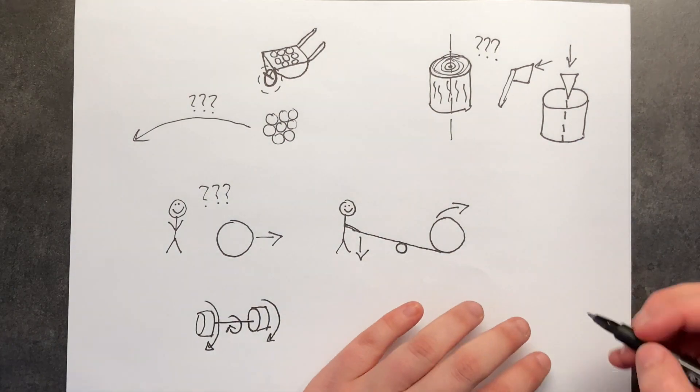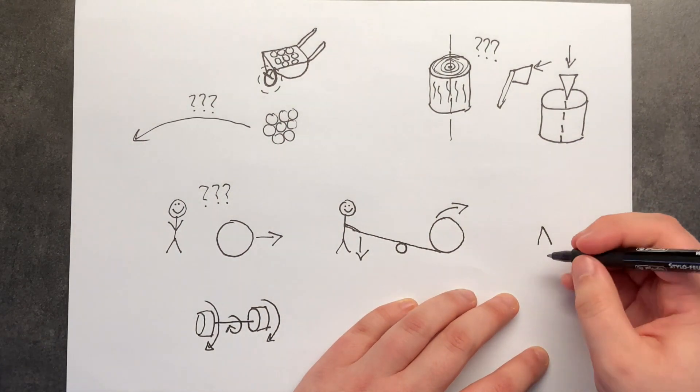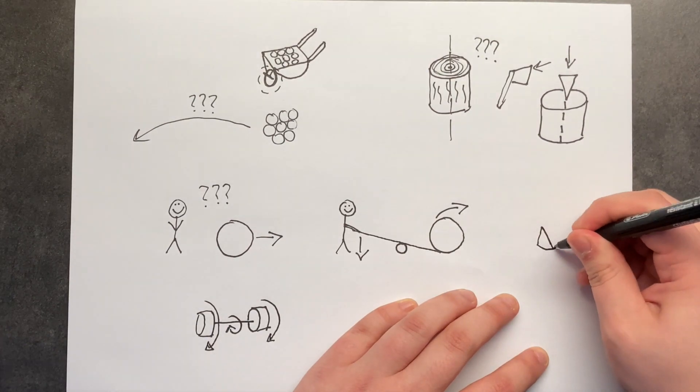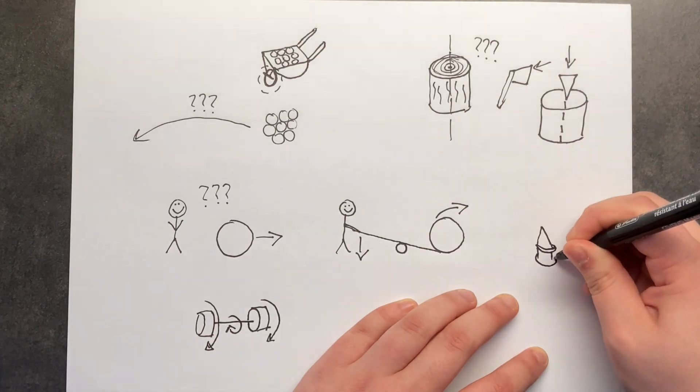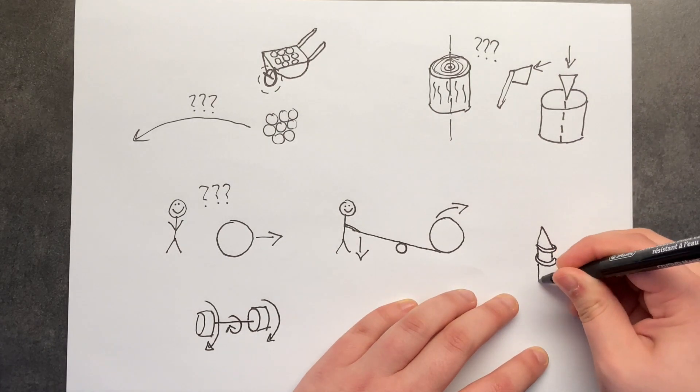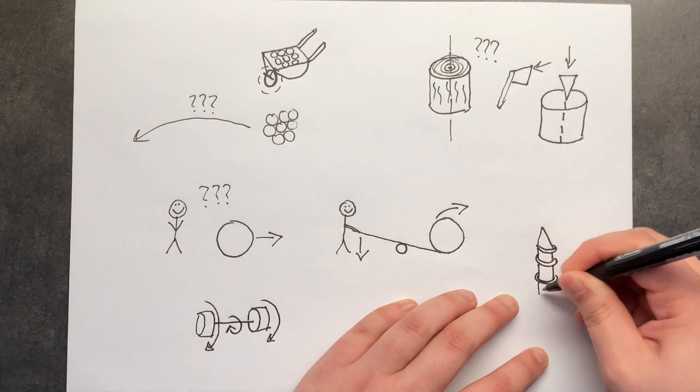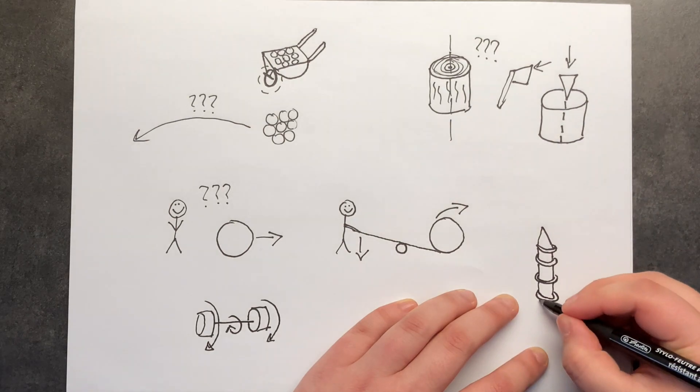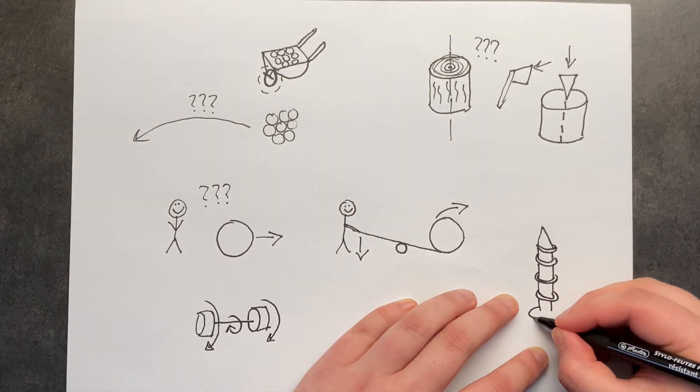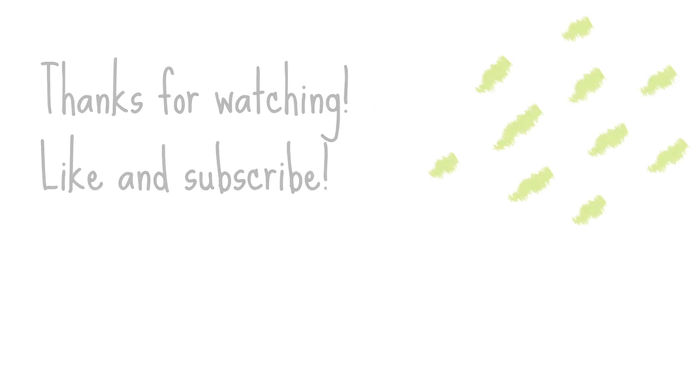Now the last simple machine that we'll take a look at is the screw and the screw is basically an inclined plane wrapped around a pole and screws can be used to lift things or to hold things together. We use screws in swivel chairs, jar lids and of course just screws when we want to build stuff.